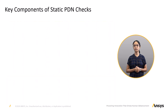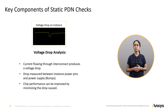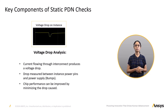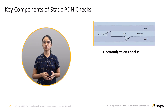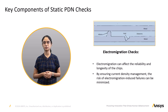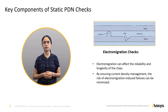Key components of static PDN checks. Voltage drop analysis: a voltage drop occurs when current flows through resistance, leading to a drop in the voltage across the power distribution network. IR drop analysis measures the voltage differences between the power supply and the instance pins to identify potential issues. By assessing and minimizing the IR drop, the chip's performance and reliability can be enhanced. Electro-migration checks: electro-migration can cause structural damage such as voids or hillocks which affect the reliability and longevity of the chips. By ensuring proper current density management, the risk of electro-migration induced failures can be minimized.